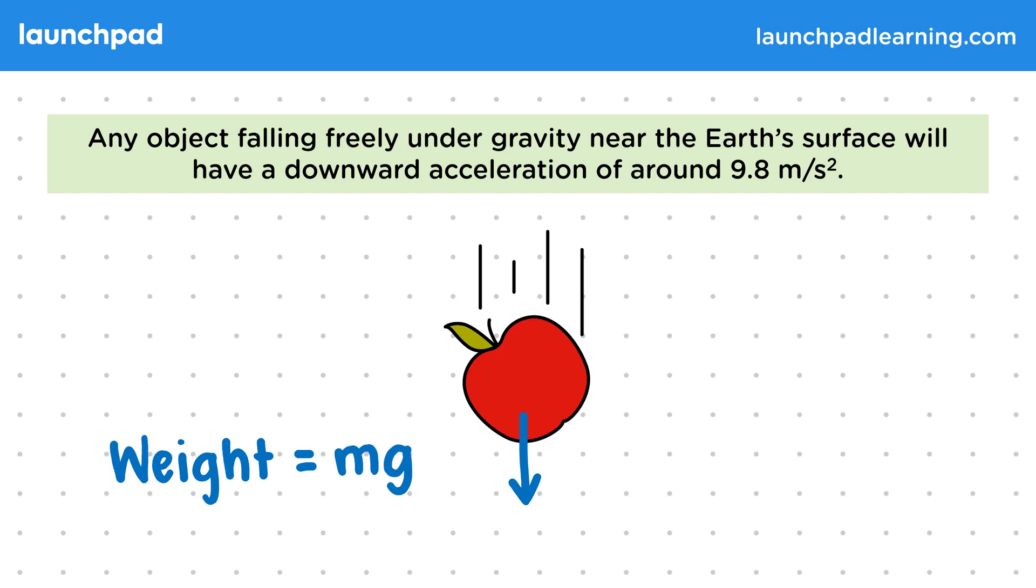Now if no other forces act on the apple then we can show that the acceleration of the apple is equal to g, and hence the apple's acceleration is 9.8 metres per second squared. Make sure you remember this value as you'll be expected to recall it in an exam.